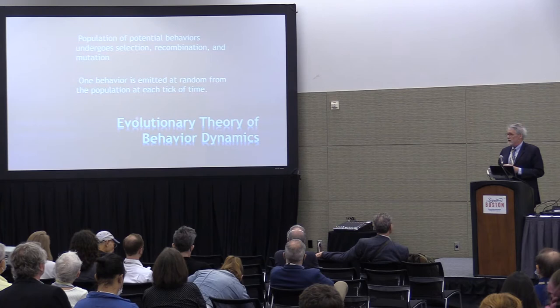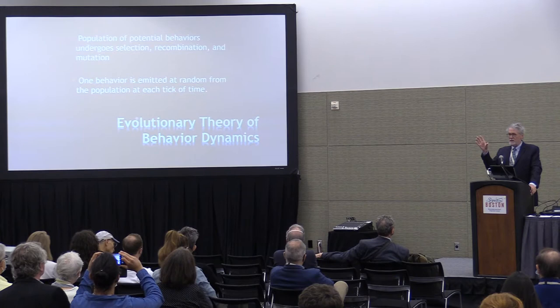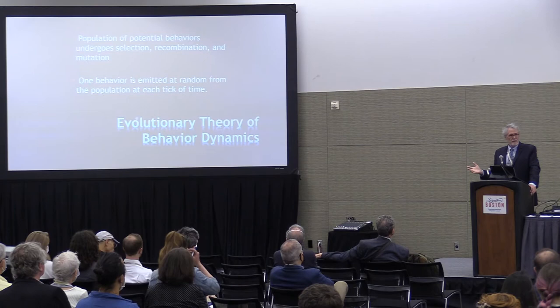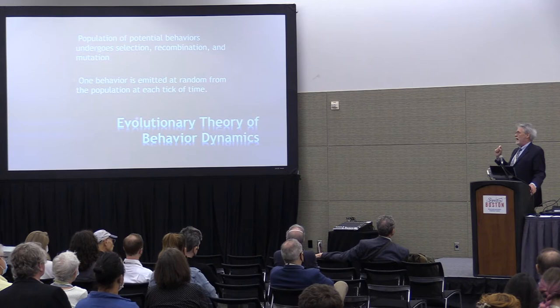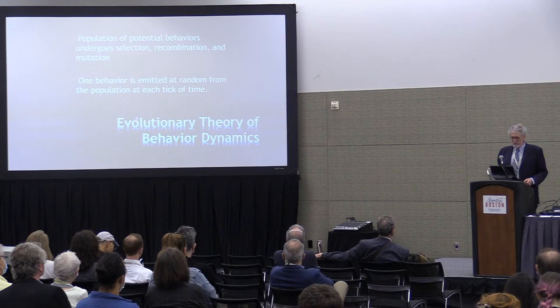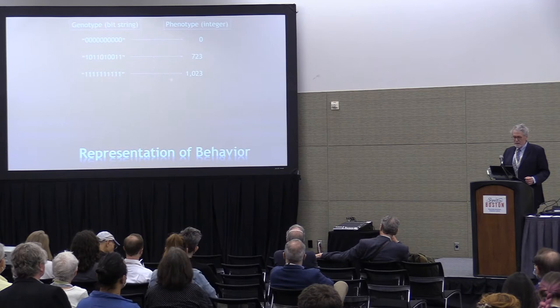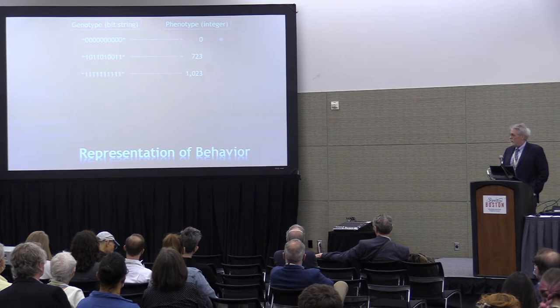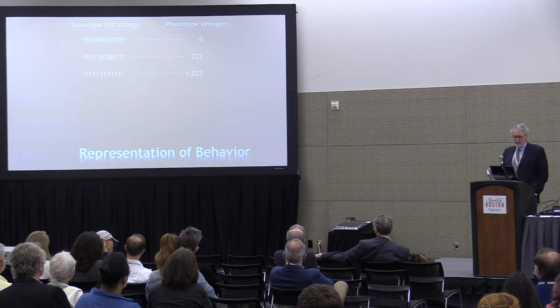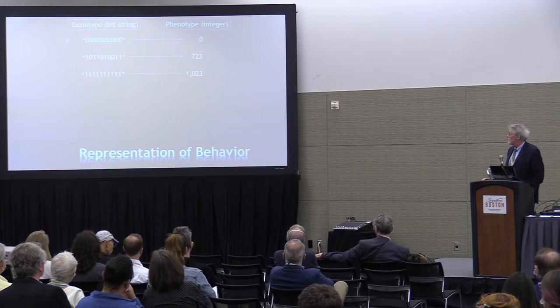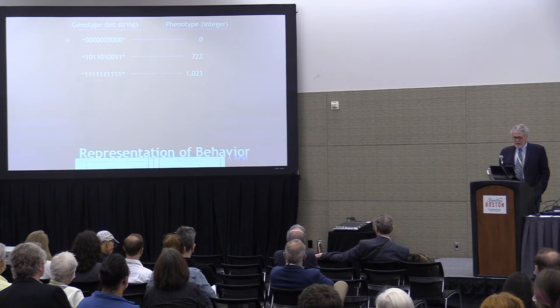So how do we implement these rules in the evolutionary theory? We have a population of potential behaviors, and this population undergoes selection, recombination, and mutation. One behavior is emitted from the population at random at each tick of time — that behavior comes out into the world and can be observed and measured, just like the behavior of live organisms. We represent behaviors by phenotypes, or integer values — let's say from 0 to 1023 — and we call these integer values the phenotypes. Each phenotype has a binary representation, which we call the genotypes of the behaviors.